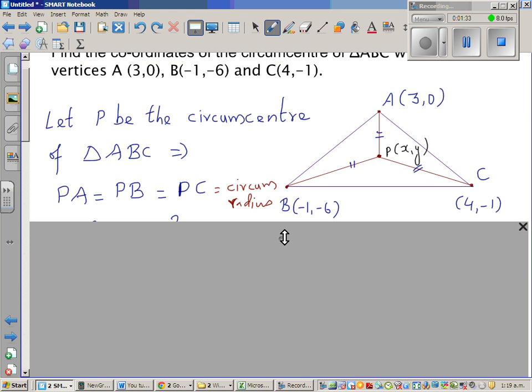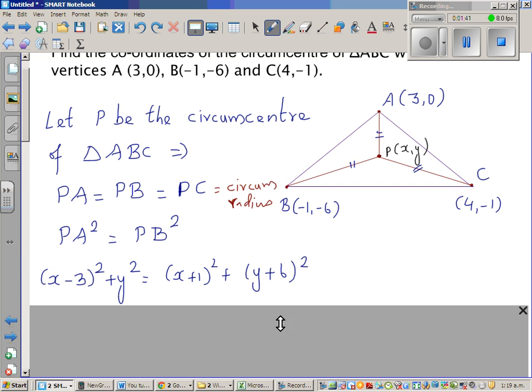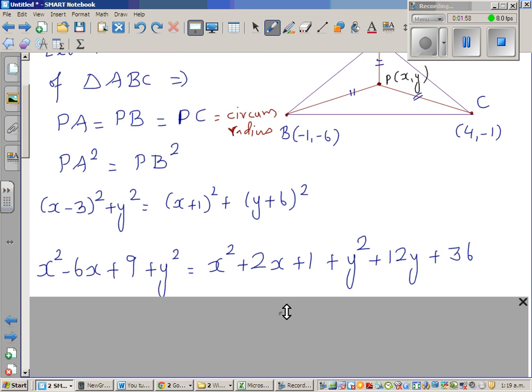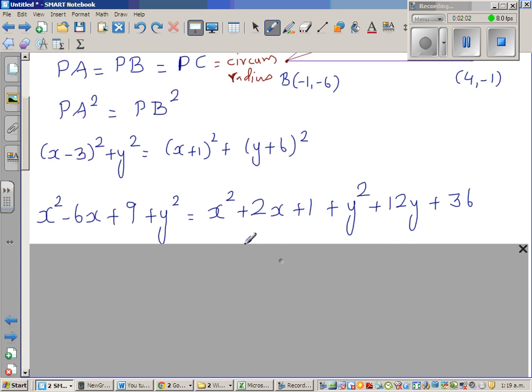So here, the same principle: PA squared is equal to PB squared. Using the distance formula, I can write (x-3)² + (y-0)² = (x+1)² + (y+6)². So I want you to look at this step. Hopefully you can understand that. It's a simple expansion of this.